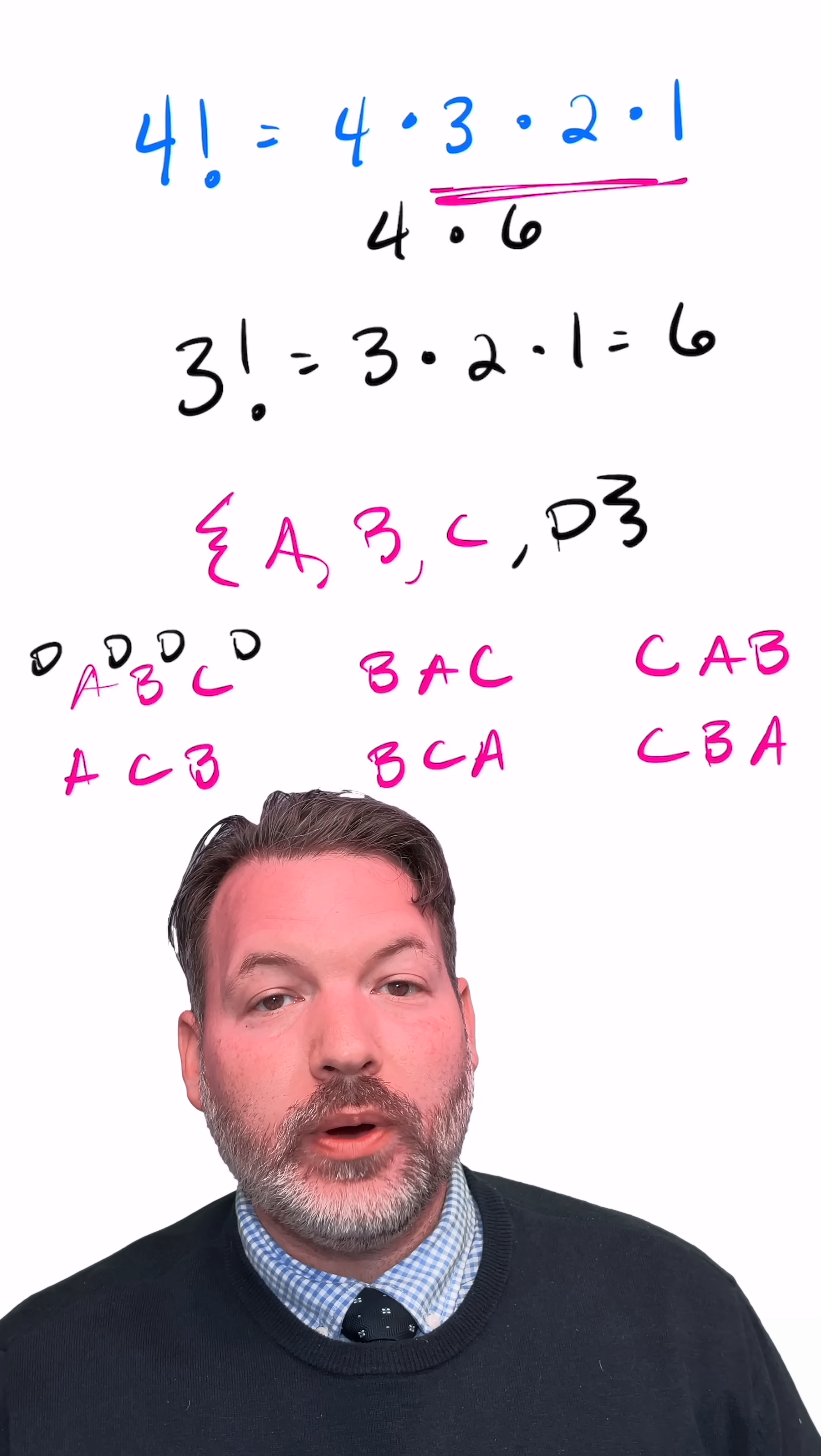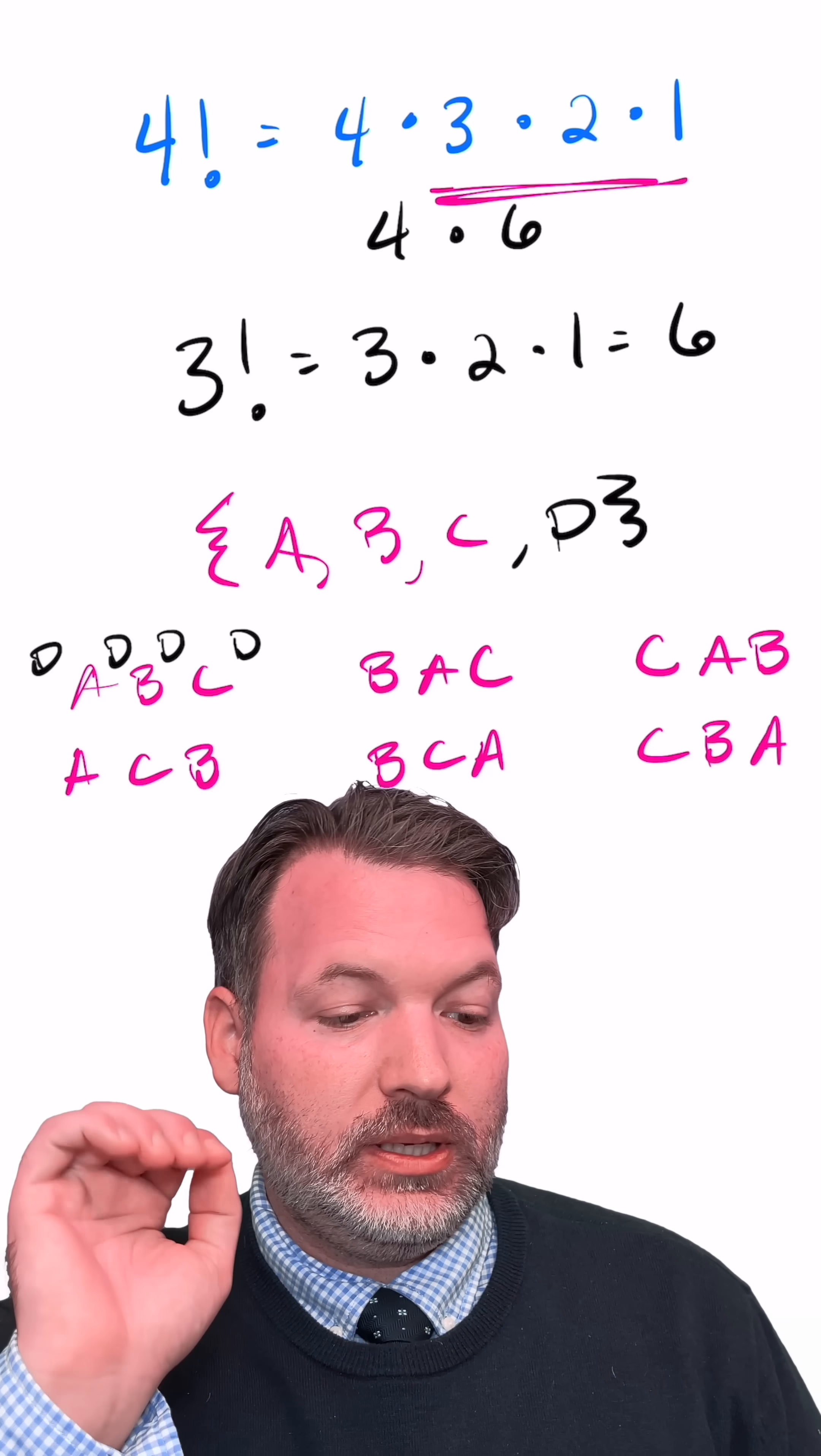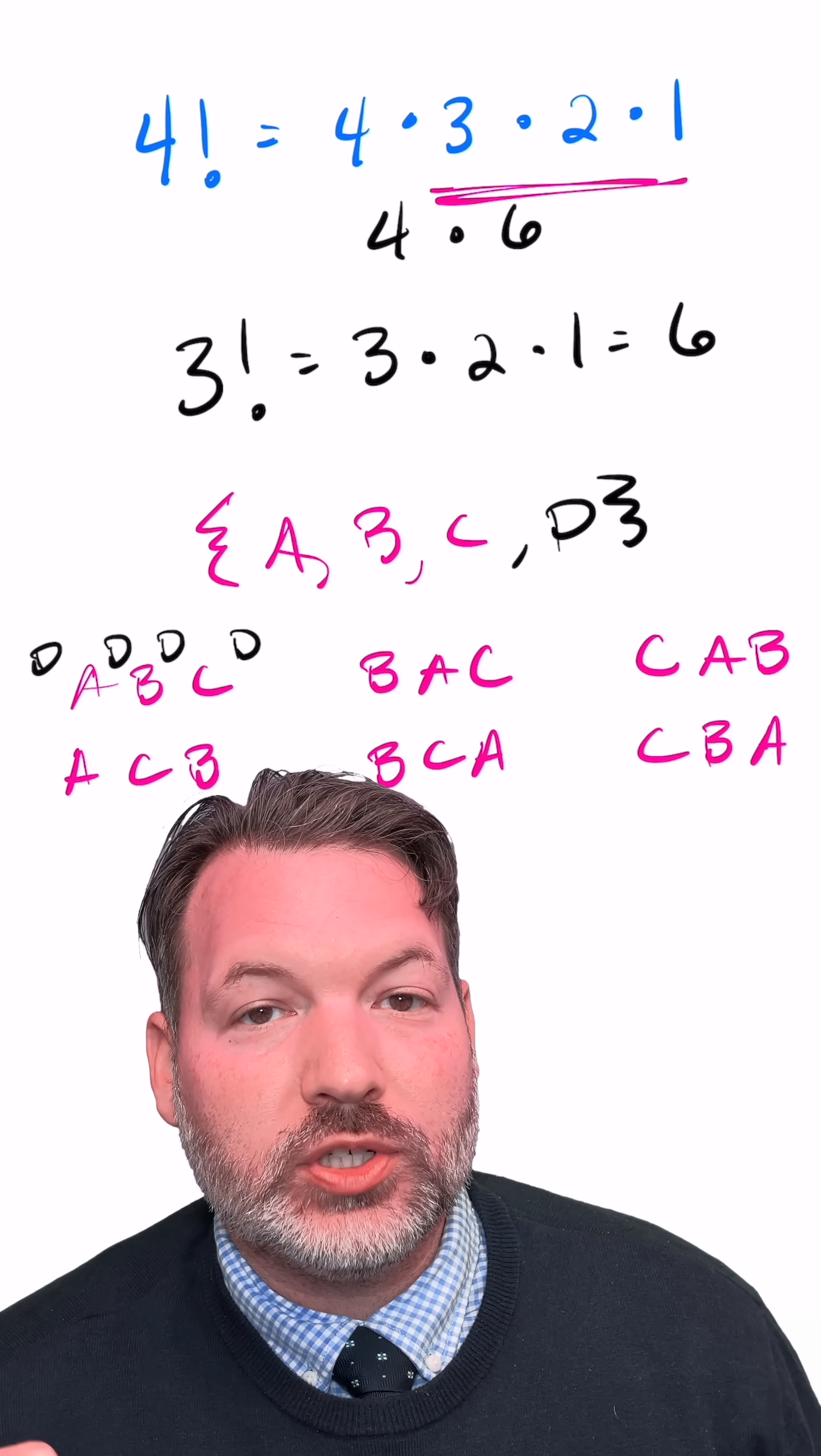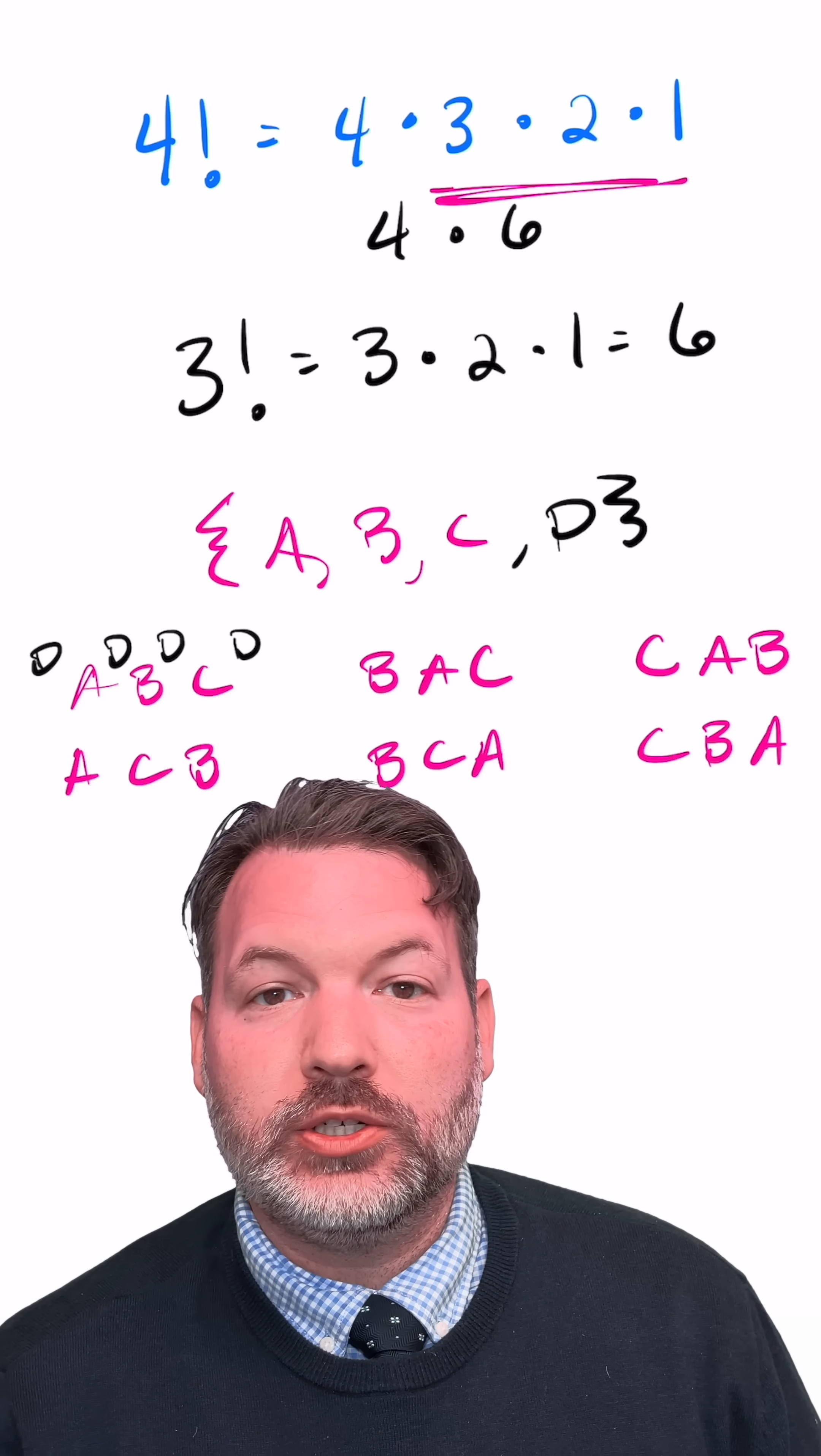For a set with two elements, of course there are only two possible arrangements: a and then b, or b and then a. And for a set with just one element, a, there's only one way to arrange it.